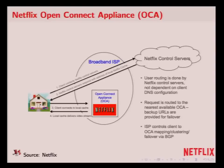Once it gets to the server, the set-top box says give me this video. There are algorithms that say I'm streaming okay, I'm going to give you better quality, or the network conditions are bad, I'm going to degrade quality. But ultimately, all of those data streams come off of the OCA appliance, which is nothing but an x86 box, rack-mounted like I showed in a previous picture.